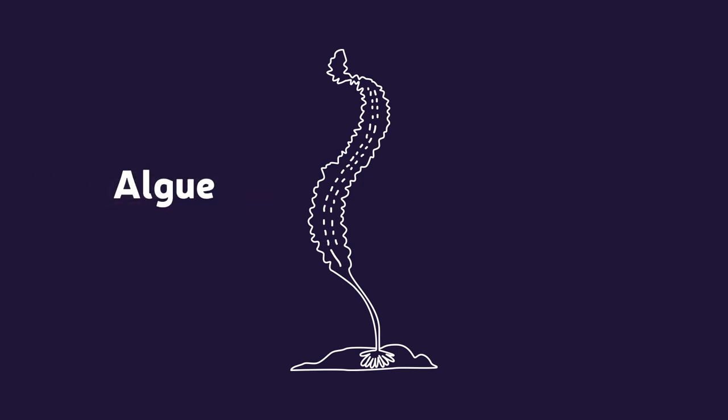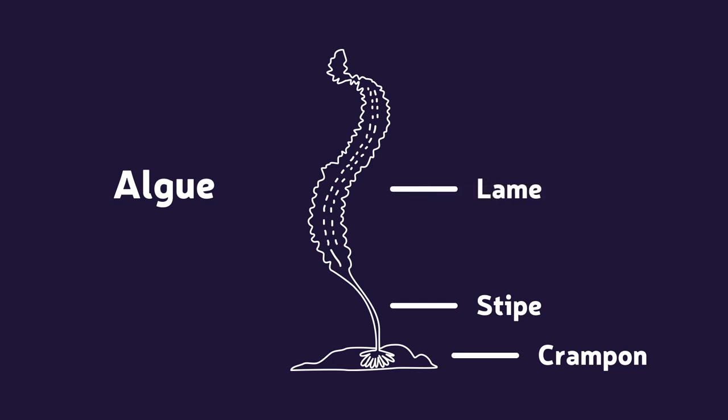Les algues, c'est les premiers organismes photosynthétiques fixés au fond qui sont apparus dans les mers. Ils n'ont pas de système racinaire. Ils sont fixés sur les substrats durs, notamment les roches, avec ce qu'on appelle un crampon. La structure qui leur permet de se tenir assez droit dans l'eau, ça s'appelle un stipe. Et puis, la partie où se passe la photosynthèse, ce qu'on voit vraiment grand, ça s'appelle une fronde ou une lame.